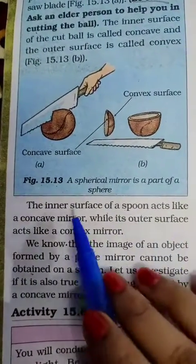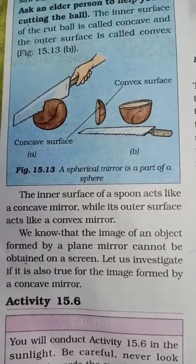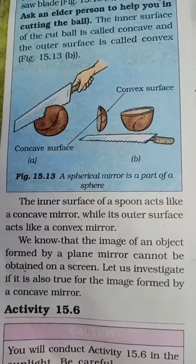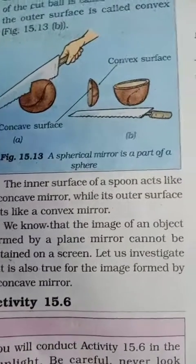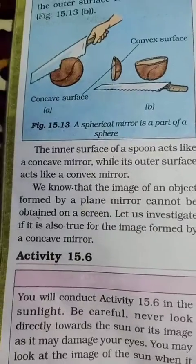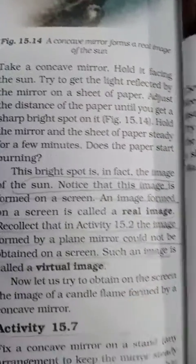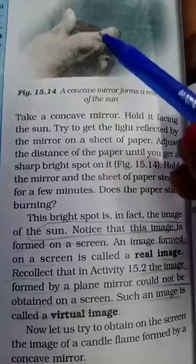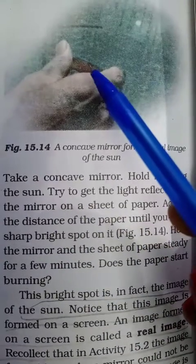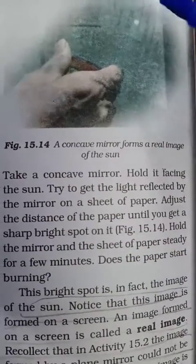The inner surface of a spoon acts like a concave mirror, while its outer surface acts like a convex mirror. Similarly, if you cut a spherical ball, the inner portion is concave and the outer portion is convex. Now, for the next activity, take a concave mirror, hold it facing the sun, and try to get the light reflected by the mirror onto a sheet of paper placed in front of it.